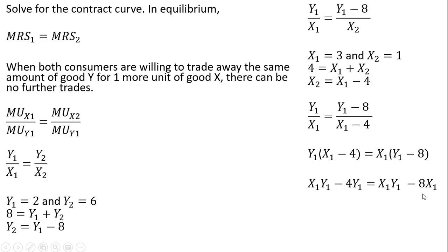Simplifying the left-hand side, you'll notice these x, y terms cancel. The minus signs cancel. And then dividing through by 4, we have our contract curve.